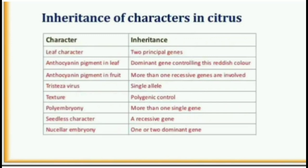Inheritance of Characters in Citrus: Leaf character is controlled by two principal genes. Anthocyanin pigment in leaf is controlled by a dominant gene controlling reddish color. Anthocyanin pigment in fruit involves more than one recessive gene. Tristeza virus involves a single allele. Texture is under polygenic control. Polyembryony involves more than one single gene. Seedless character is controlled by a recessive gene. Nuclear embryony is governed by one or two dominant genes.